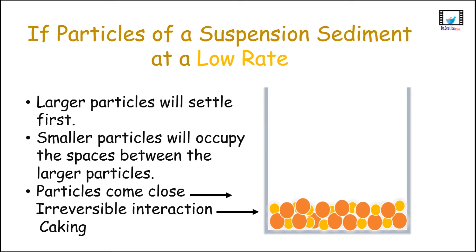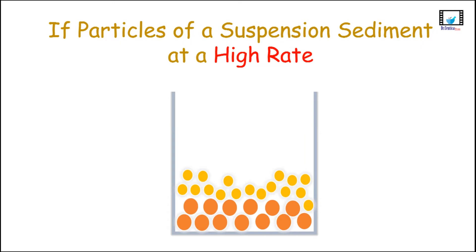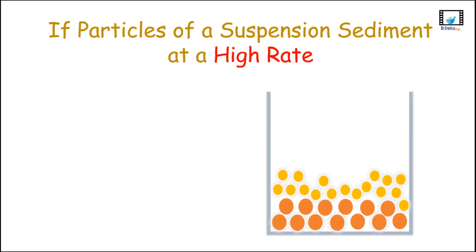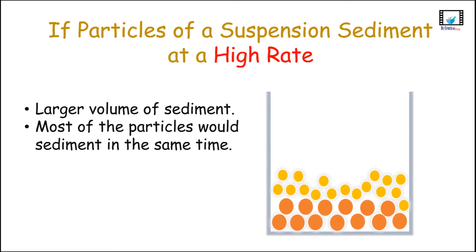I will put the link to that video in the description box for you. Now let's look at another scenario — fast sedimentation rate. If the sedimentation rate is relatively fast, particles will not have the chance to have that close interaction with each other. They will not cake, but rather they will form floccules, which will be easily redispersed upon gentle shaking, meaning that accurate doses can be much easier taken from this type of suspensions. This is referred to as secondary minimum interaction result.